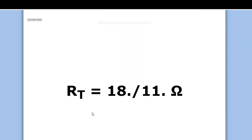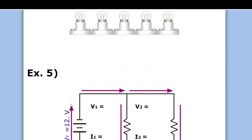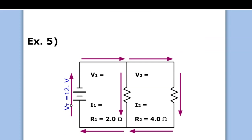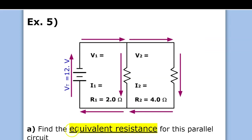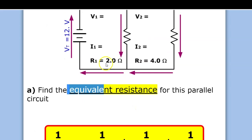Here's a parallel circuit. What is the equivalent resistance — that means the total resistance. Do we get to use the easy equation? We've got the total voltage, but we know the two resistance values, so unfortunately we've got to use the harder equation.